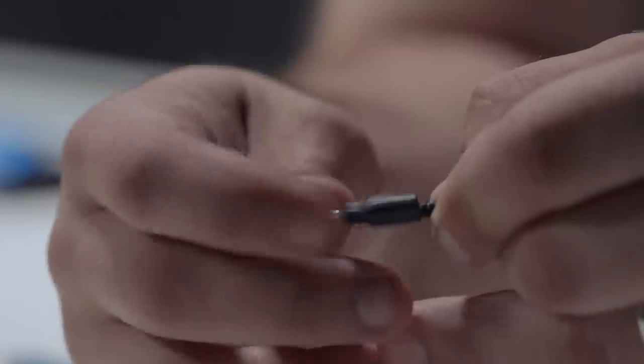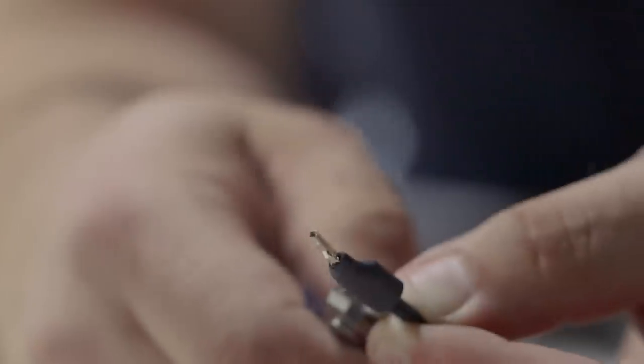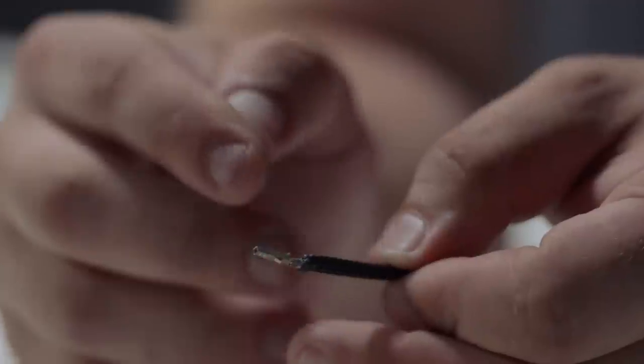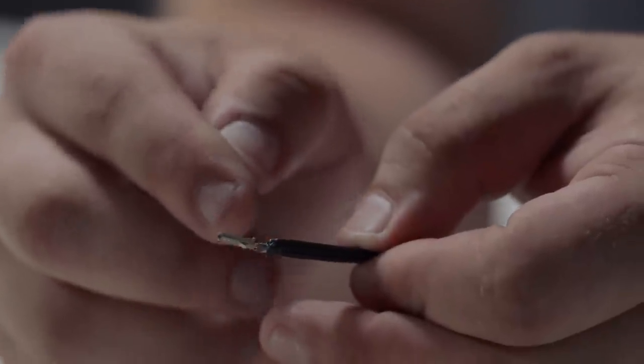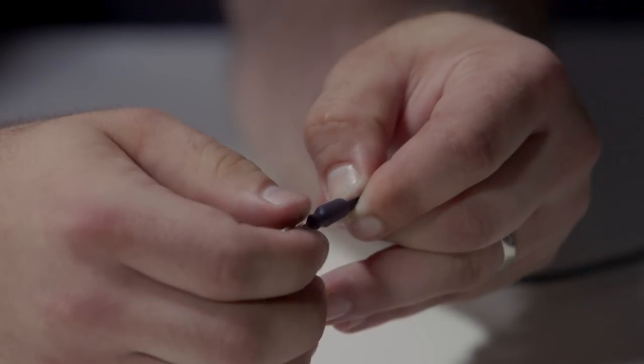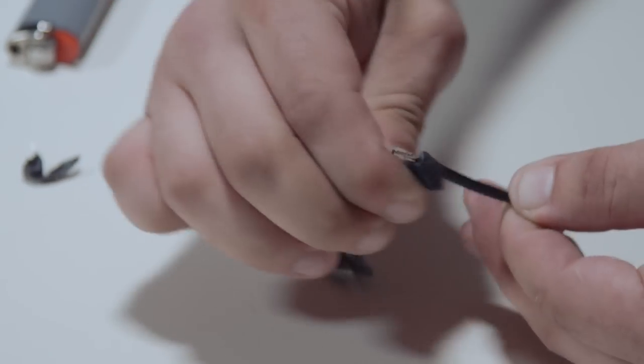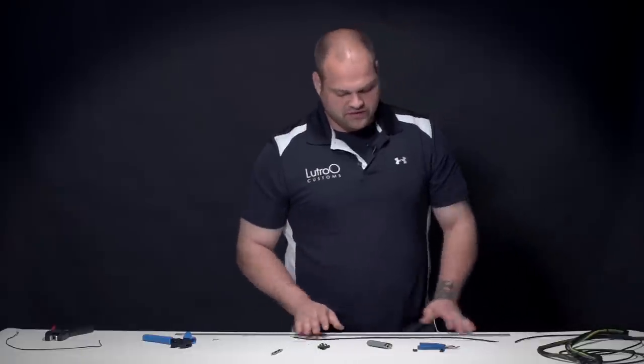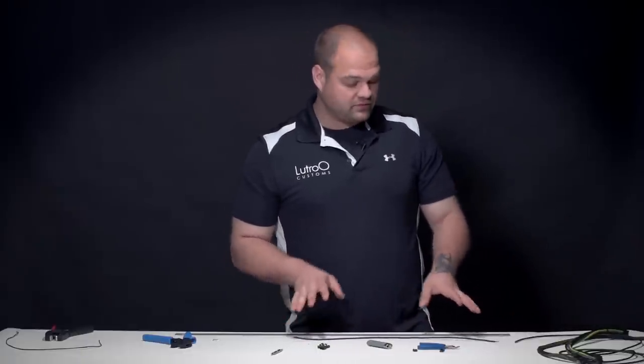And then immediately I will take my flush cutters, put a slit in it, and cut it off. What it did is it actually pinched down and it forced it into a cone. This will never come off of that end. Now, I'm going to do the same thing to the other side. This is our sleeved cable. You'll notice that it's tight, it's straight, and it's exactly the way we wanted it.